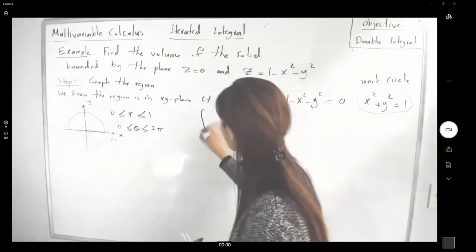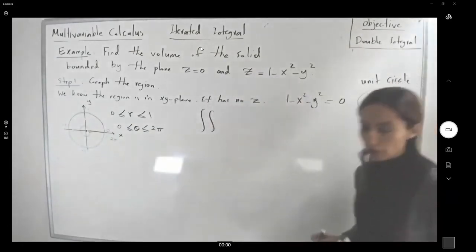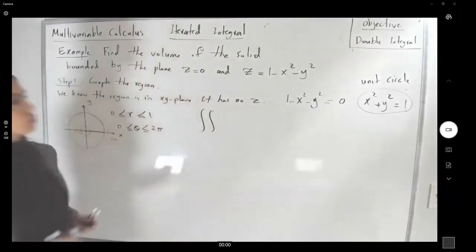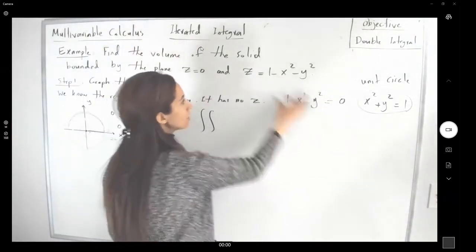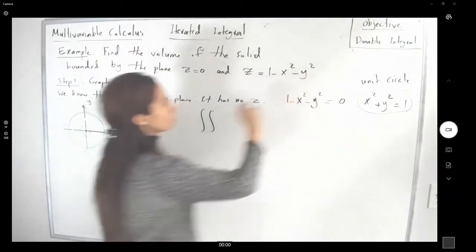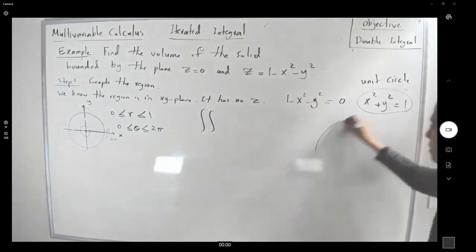This integral is double integral of, well, 1 is the function. Well, in this case, when you are dealing with your function, here you have your surface, 1 minus x squared minus y squared. So this is like this.